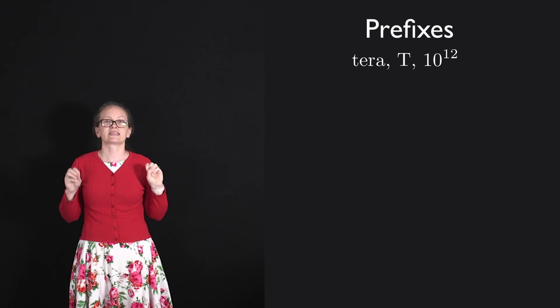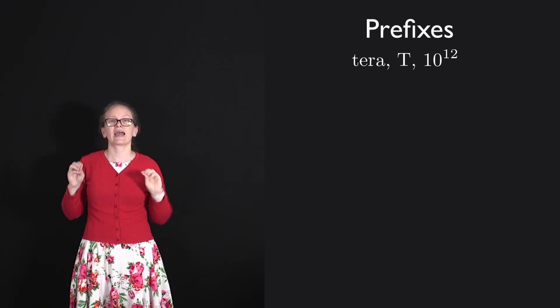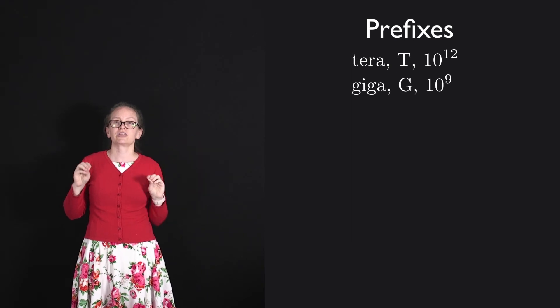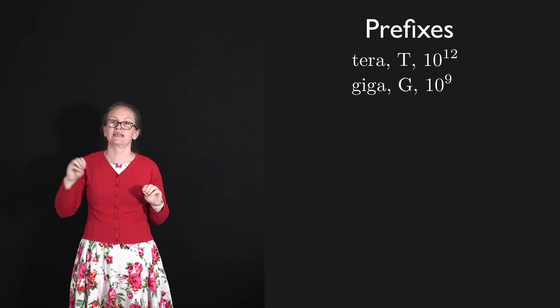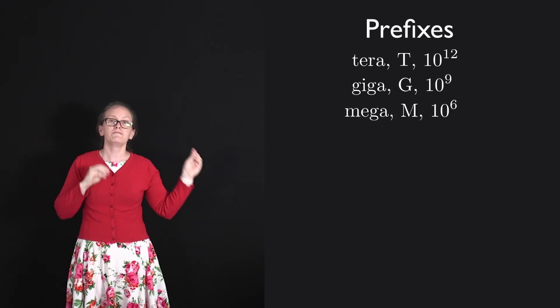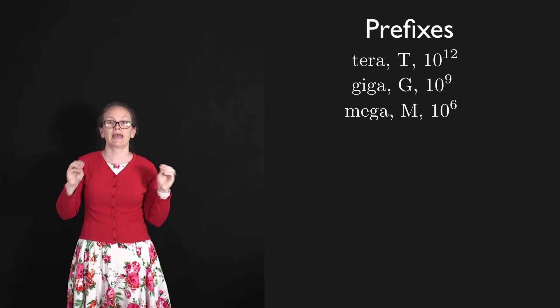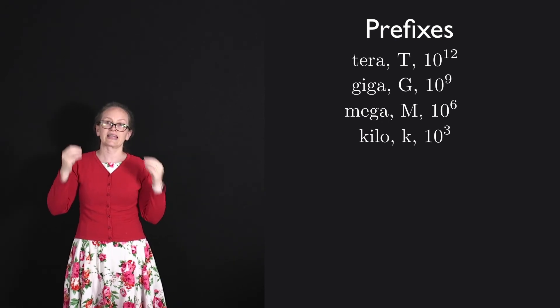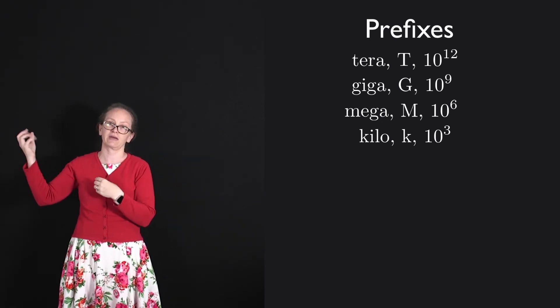A tera has the symbol capital T, and it is equal to 10 to the 12. We've got Giga, which has the symbol capital G, and it is 10 to the 9. Mega has the symbol capital M, and it is equal to 10 to the 6. Kilo is a lowercase k, and it is 10 to the 3.